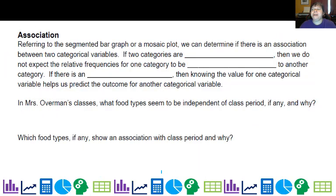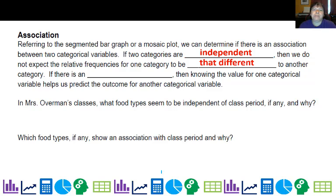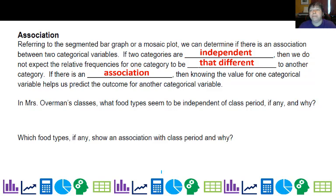Last but not least: association. You are expected to determine if there's an association between two categorical variables. If they're independent — no association — then we expect the frequencies to not be that different. For example, the amount of people who love burgers in first period and in third period should be about the same. If there is an association, then knowing which period you're talking about lets you predict what percent like burgers.